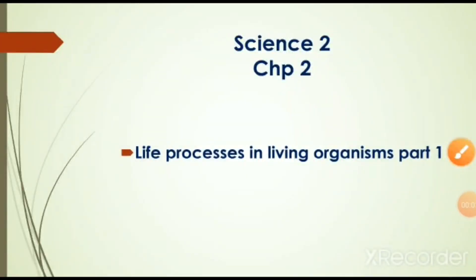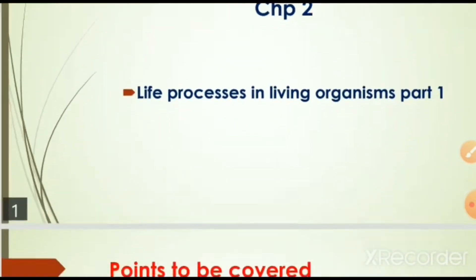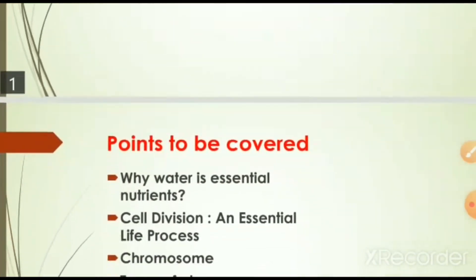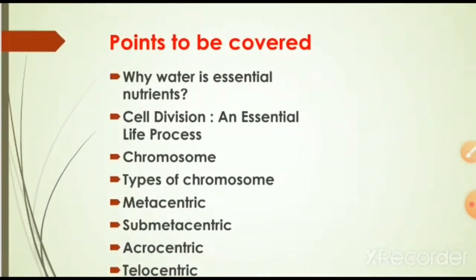Good morning students. Subject: Science 2, Chapter 2 - Life Processes in Living Organisms, Part 1. Today's points to be covered: why water is an essential nutrient, cell division as an essential life process, chromosomes, and types of chromosomes — metacentric, submetacentric, acrocentric, and telocentric.